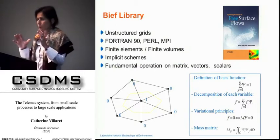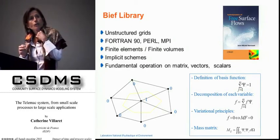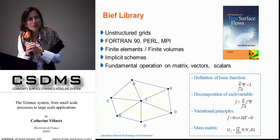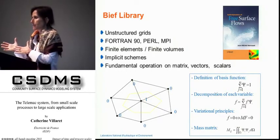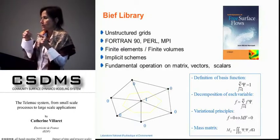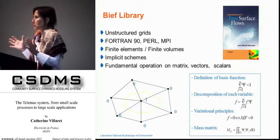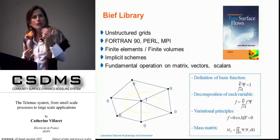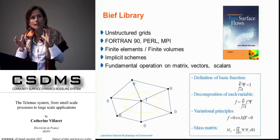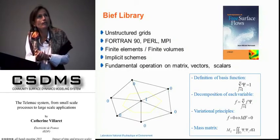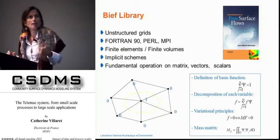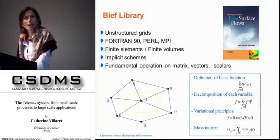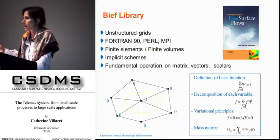The BIEF library is the heart of the whole model, written by Jean-Michel Hervouet, who also wrote a book on it. You have an equivalence between finite elements and finite volumes depending on how you define the cells of integration. You don't need to know everything about finite elements to use or even program new processes, because all fundamental operations on matrices, vectors, and scalars are already built into the BIEF library. All implicit schemes allow Courant numbers up to 10, which is useful for large-scale and long-term morphodynamics.